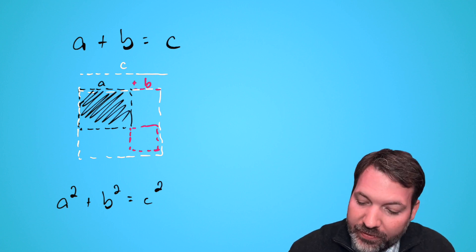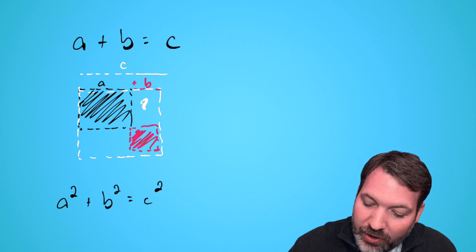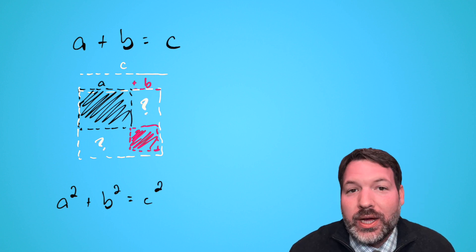The a² takes up this upper left-hand corner, and the b² takes up this lower right-hand corner, but then there are these two empty boxes that we're not accounting for.